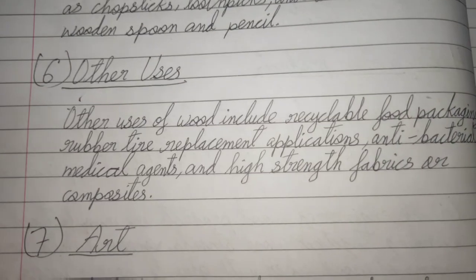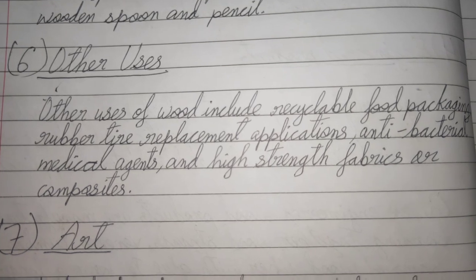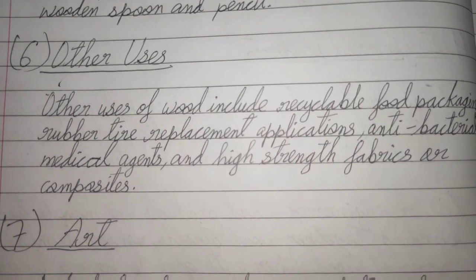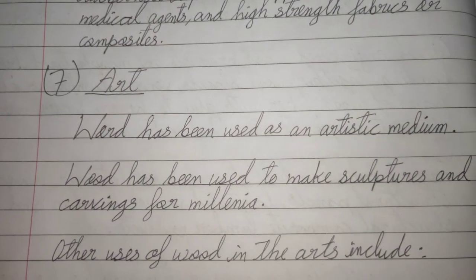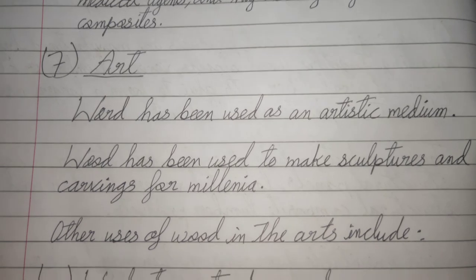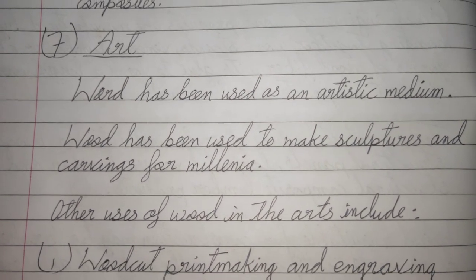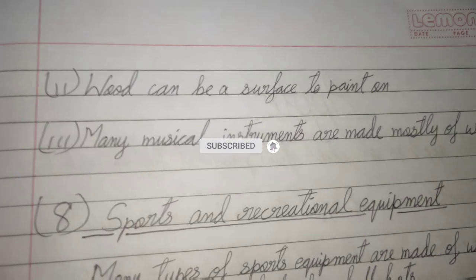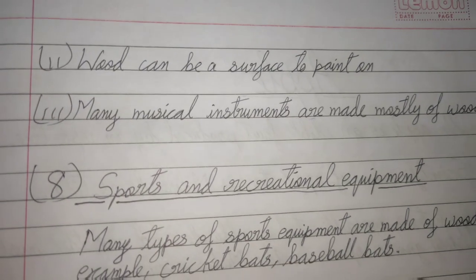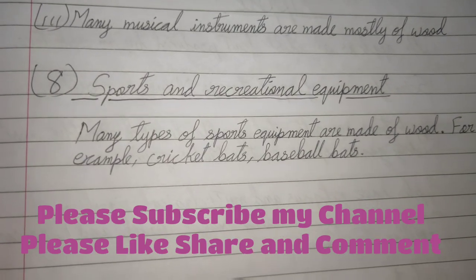Other uses of wood include recyclable food packaging, rubber and tire replacement applications, antibacterial medical agents, and high-strength fabrics or composites. Wood has been used as an artistic medium for millennia, including wood sculptures, carvings, woodcut printmaking, and engraving. Wood can also be a surface to paint on. Many musical instruments and many types of sports equipment are made mostly of wood, for example cricket bats.